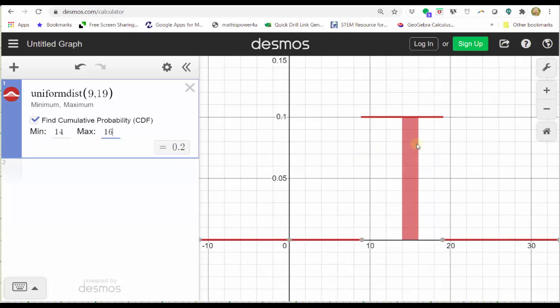Looking at the graph, we also have a graph of the rectangle, where the area of the rectangle represents the probability that X is greater than 14 and less than 16.